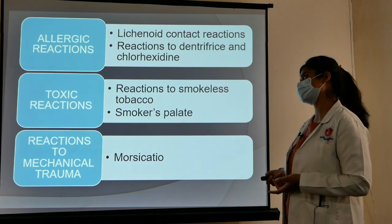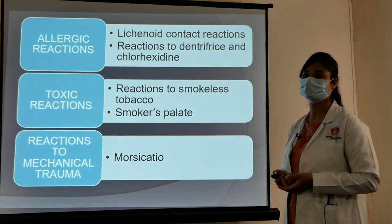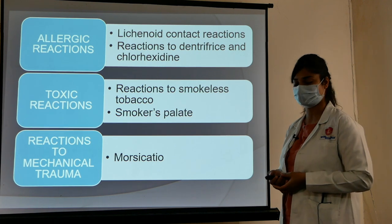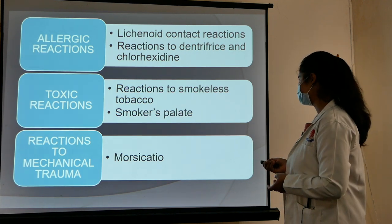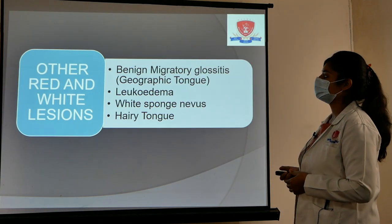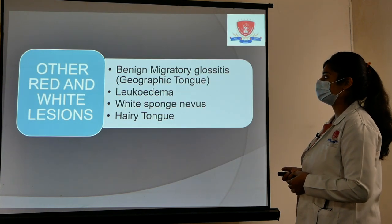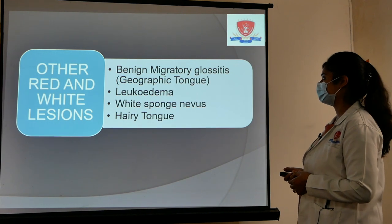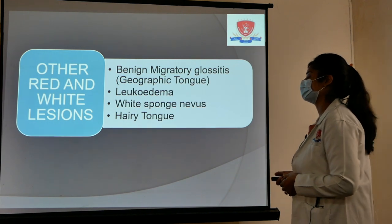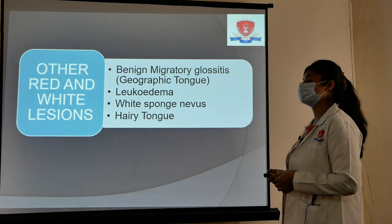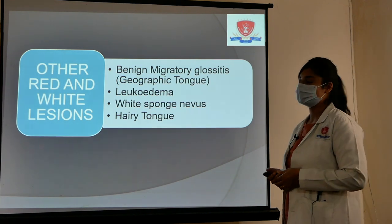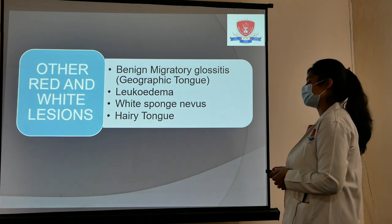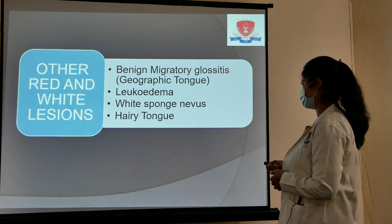If the mechanical trauma lesion is present only on the buccal mucosa, it is called morsicatio buccarum. The last category is other red and white lesions, which includes benign migratory glossitis (also known as geographic tongue), leukoedema, white sponge nevus, and hairy tongue.